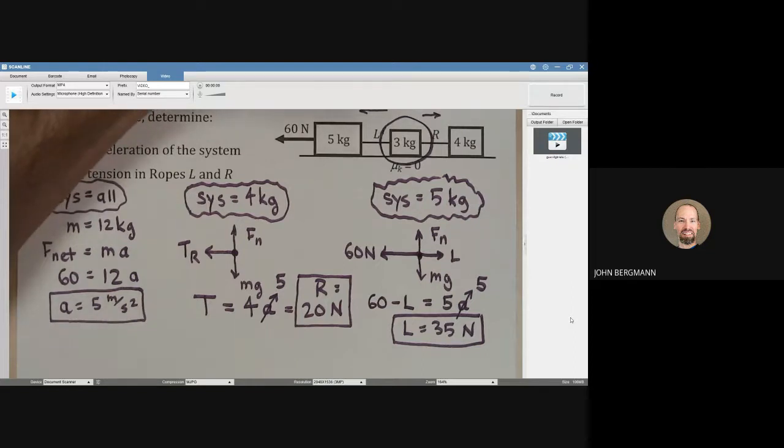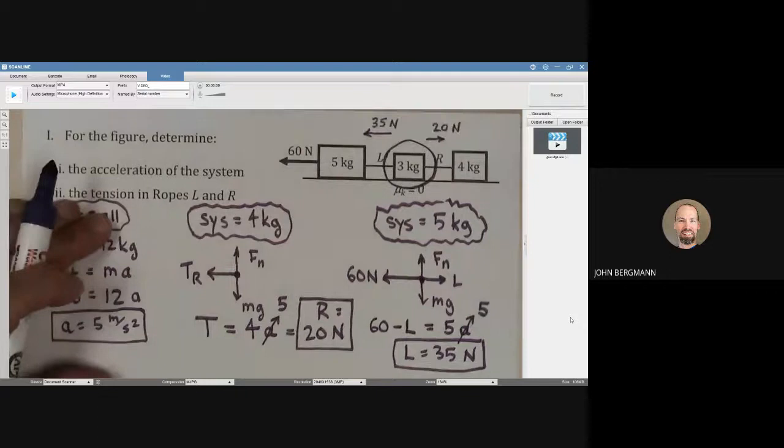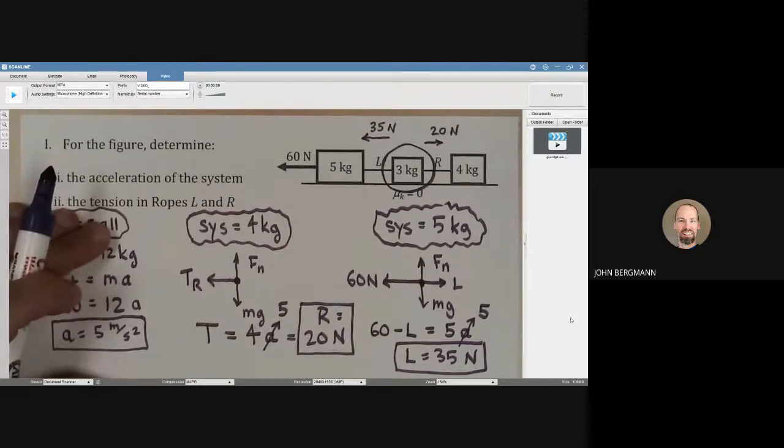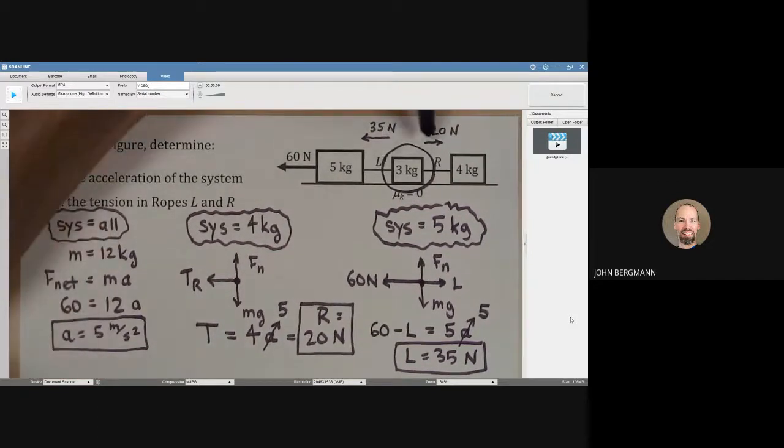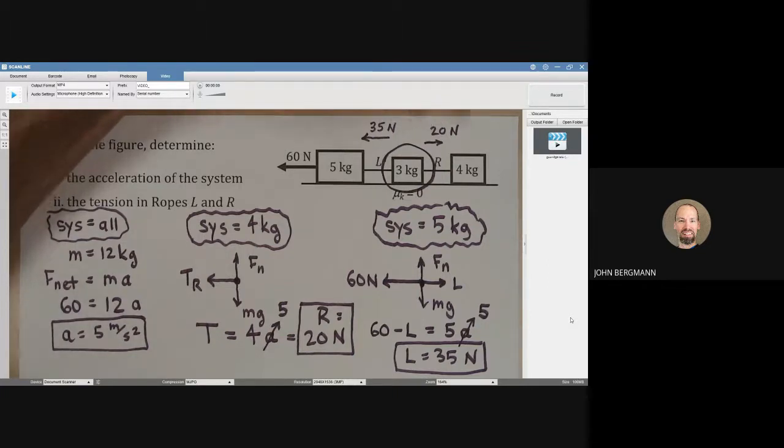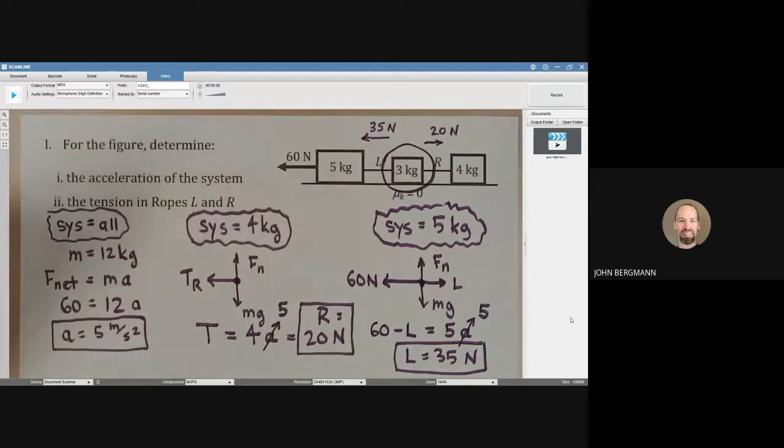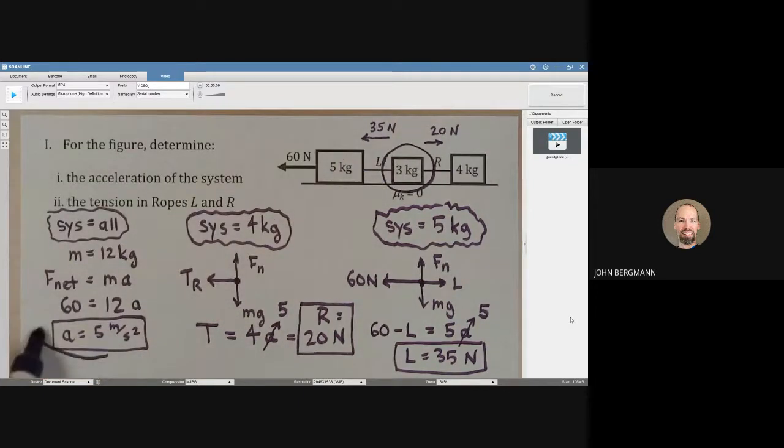35 this way, 20 that way. What is it? 15. The 3 kilogram mass. That tension in the right is 20 newtons. This left rope is trying to accelerate this 3 kilogram mass to the left with a tension of 35 newtons. What's the net force? 15. What's the mass? 3. What's the acceleration? Way down here in the lower left. Write what we said from the beginning, 5 meters per second squared.